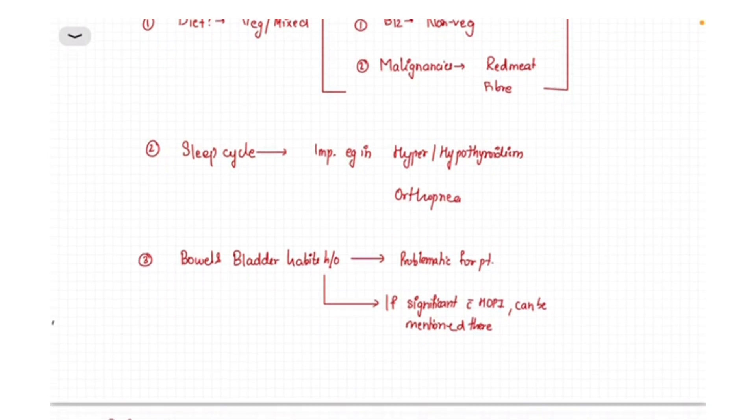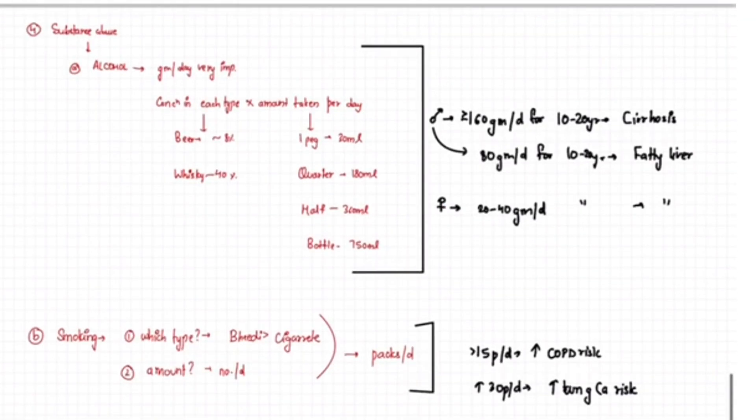Next is substance abuse, which is a very important part of history taking. Especially the history of alcohol and smoking should be very detailed. Like for alcohol, you should mention about how much gram per day the patient is taking. The significance is like if the patient takes about 80 gram of alcohol per day for 10 to 20 years, then the patient is at high risk of fatty liver.